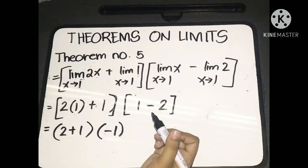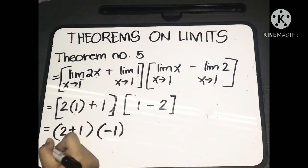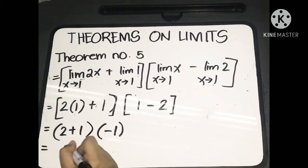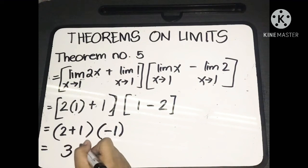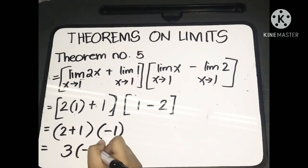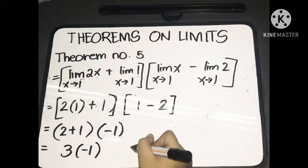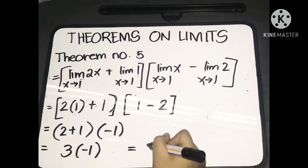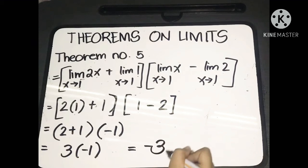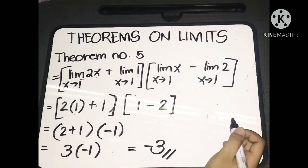Simplifying: we have 2 times 1, which equals 2, plus 1, giving us 3. Multiplied by 1 minus 2, which equals negative 1. So 3 times negative 1 equals negative 3. That is the final answer.